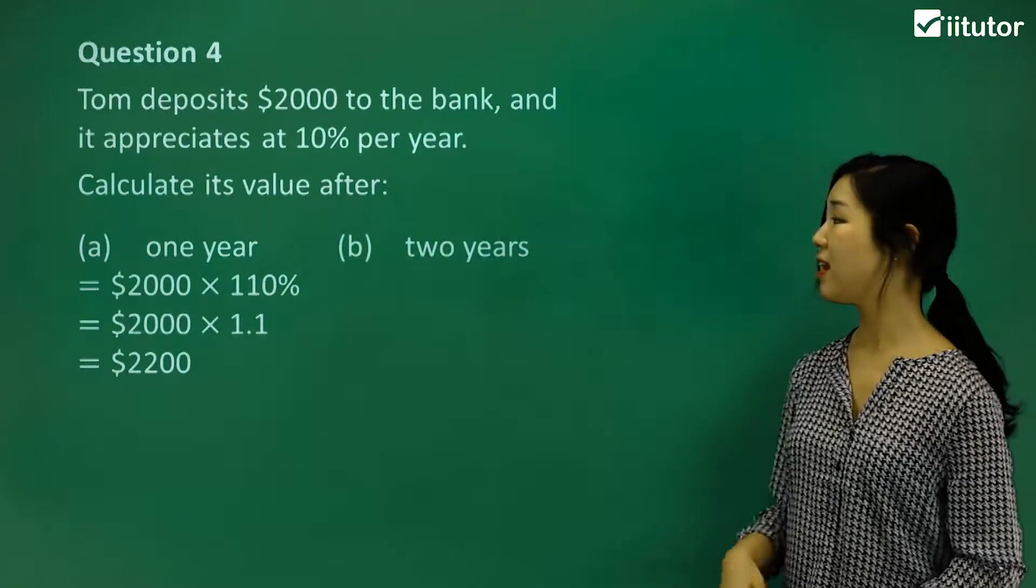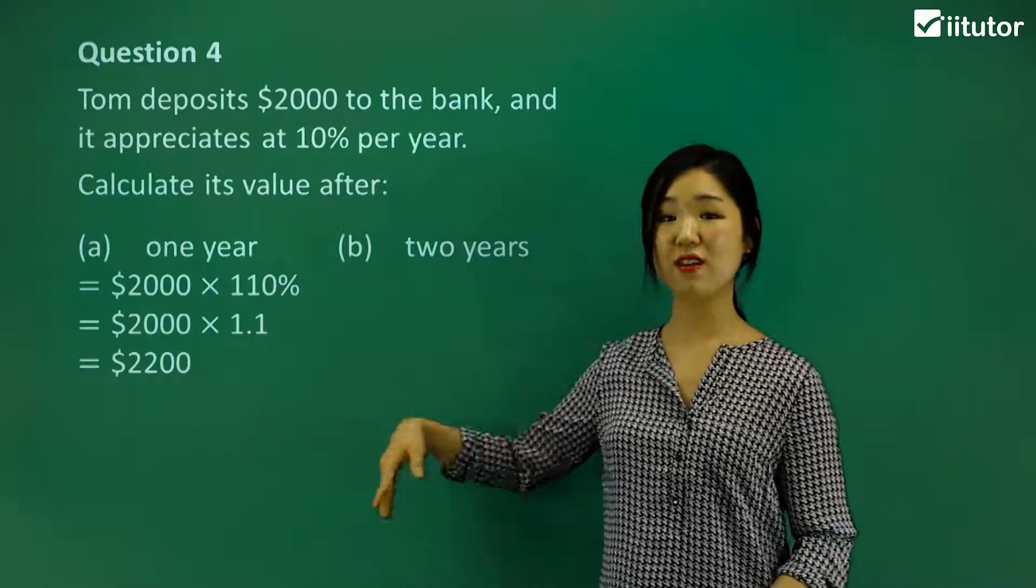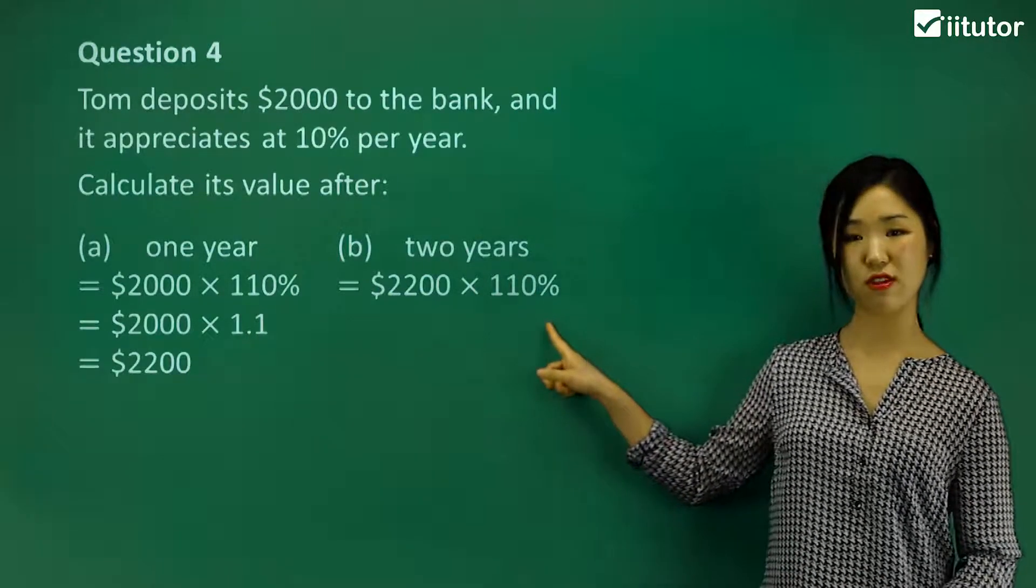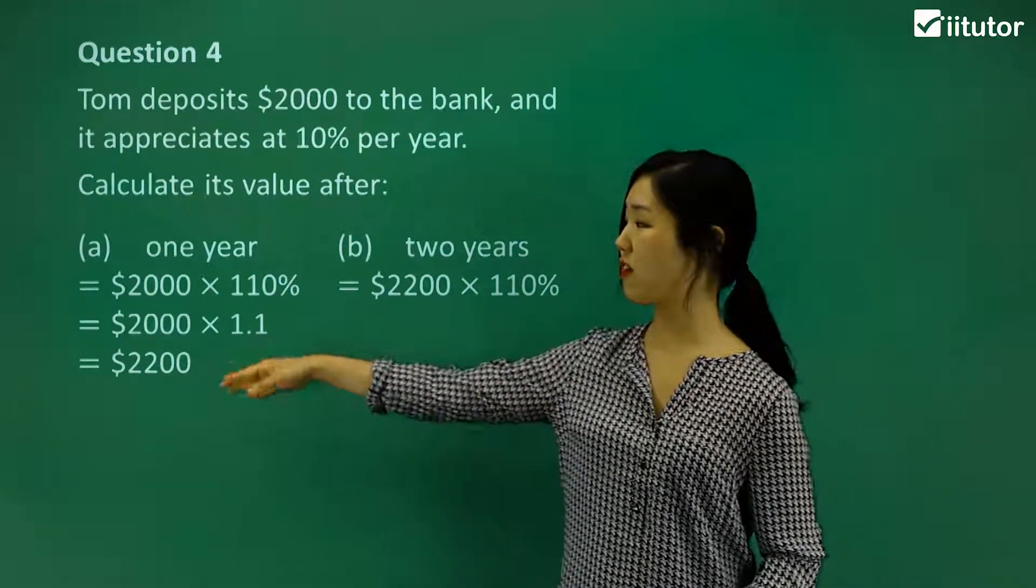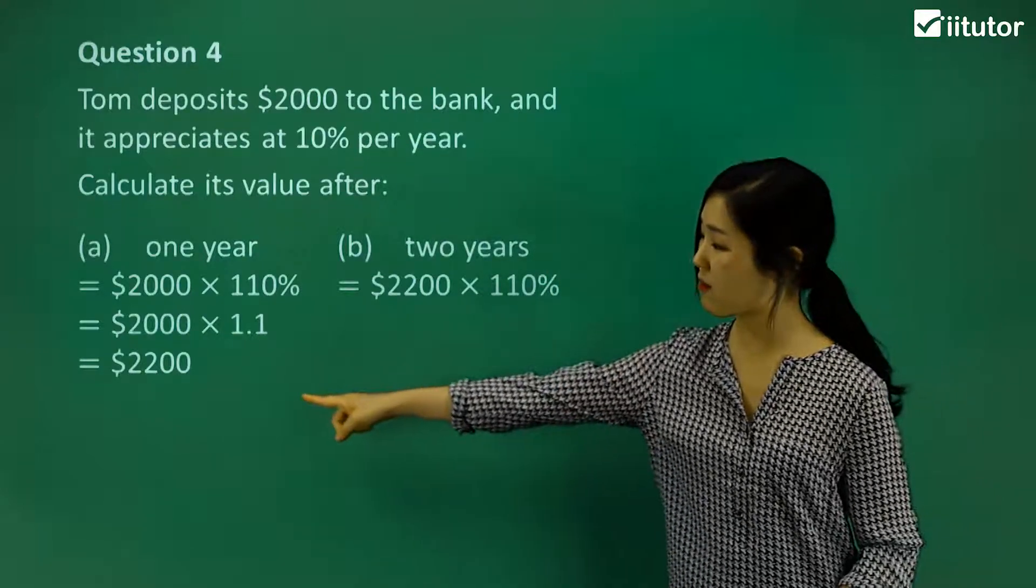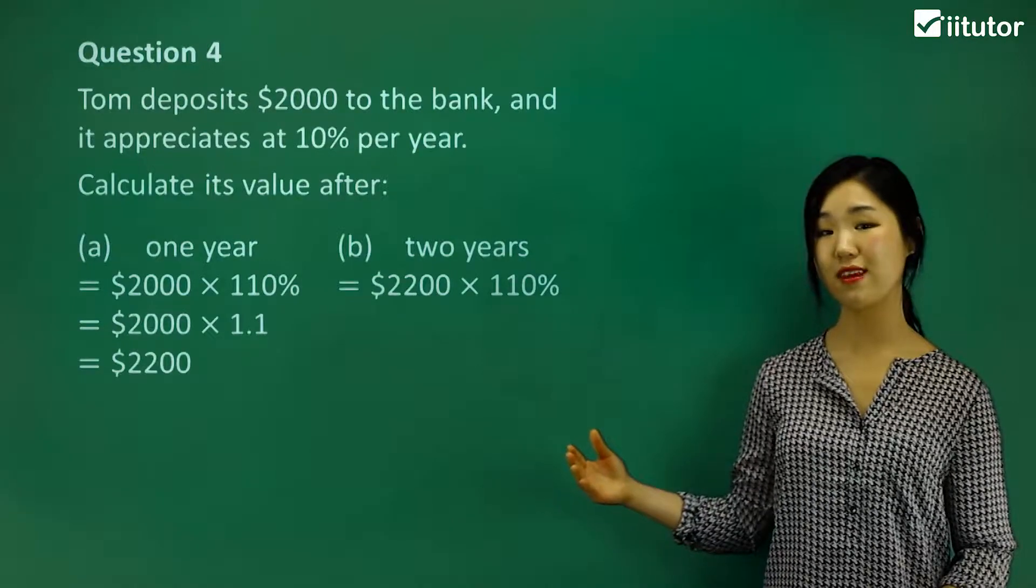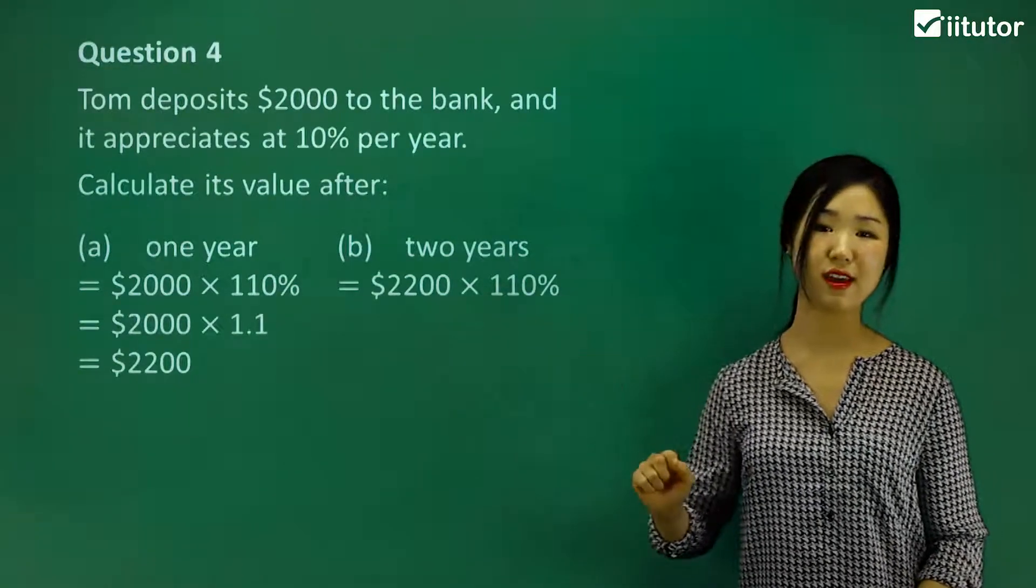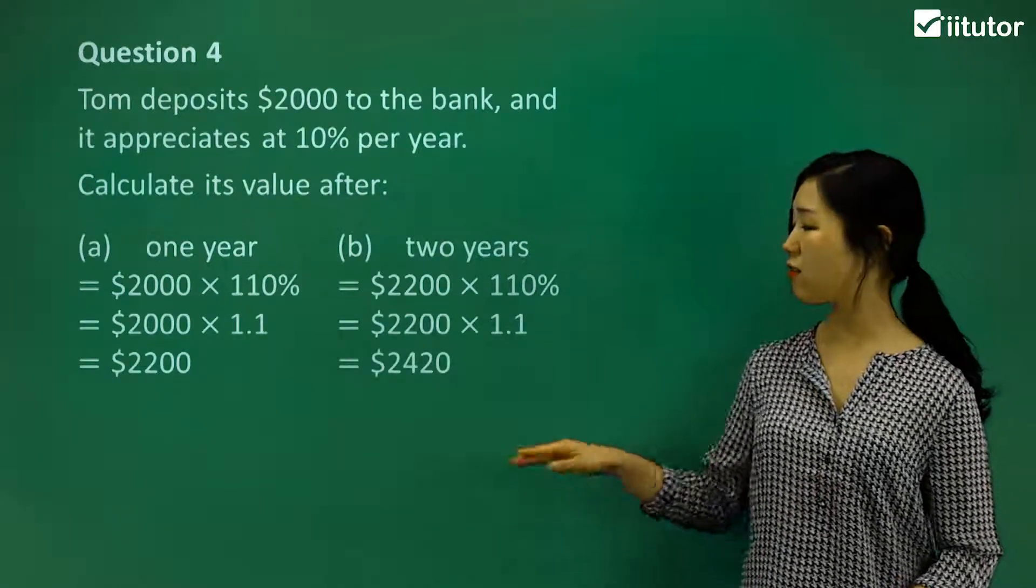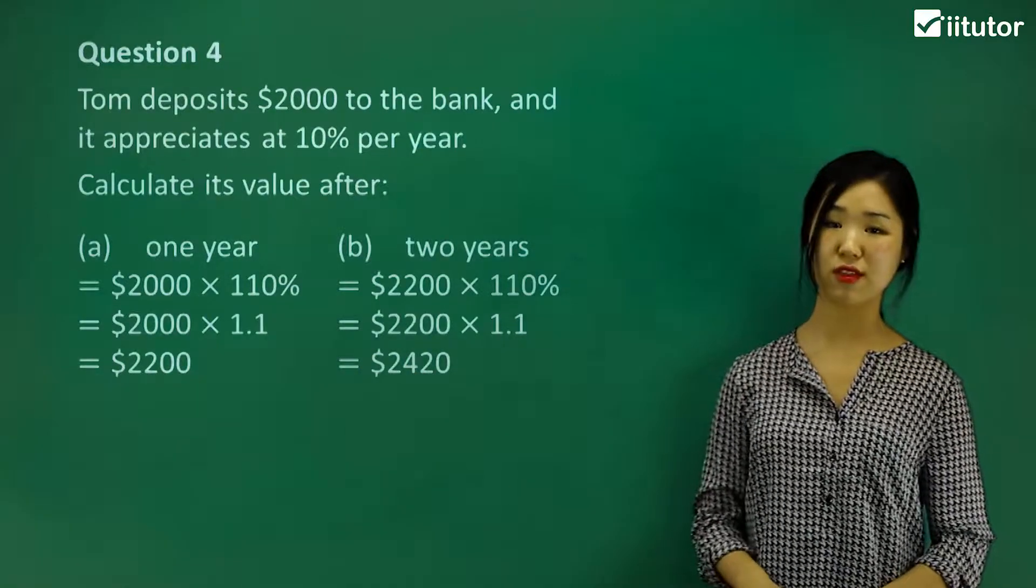So let's do B in two years. Now this is the value after one year. But if it appreciates again for another year, that means we multiply that value by 110%. Make sense? So that's already appreciated for one year. And now it's going to appreciate the second year. So to that value that we ended with, we multiply another 110% because it appreciates 10% of the previous year. So if you change it to a decimal, 1.1 and multiply, you get $2,420.